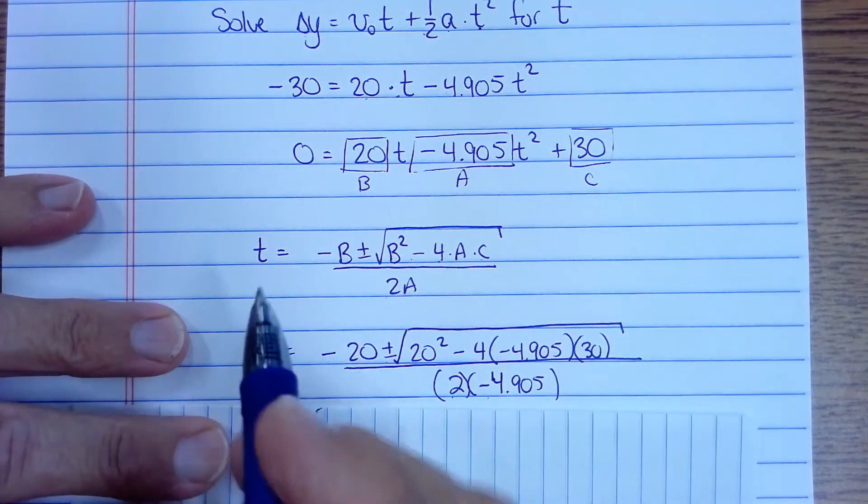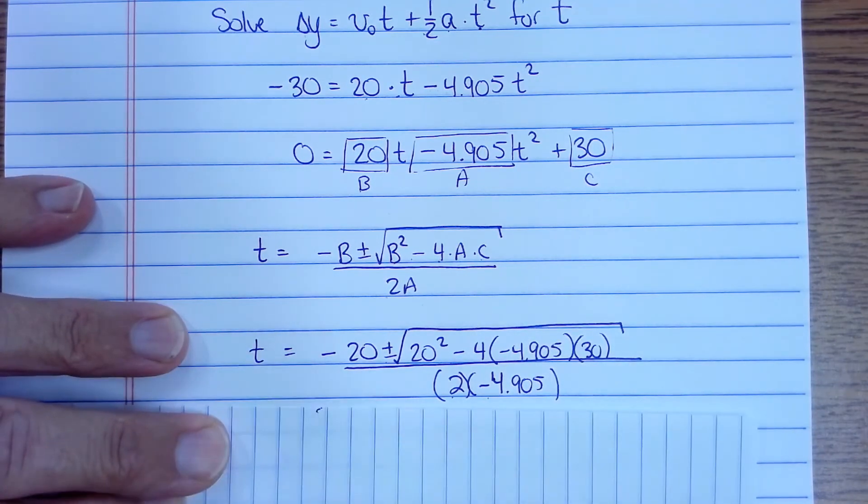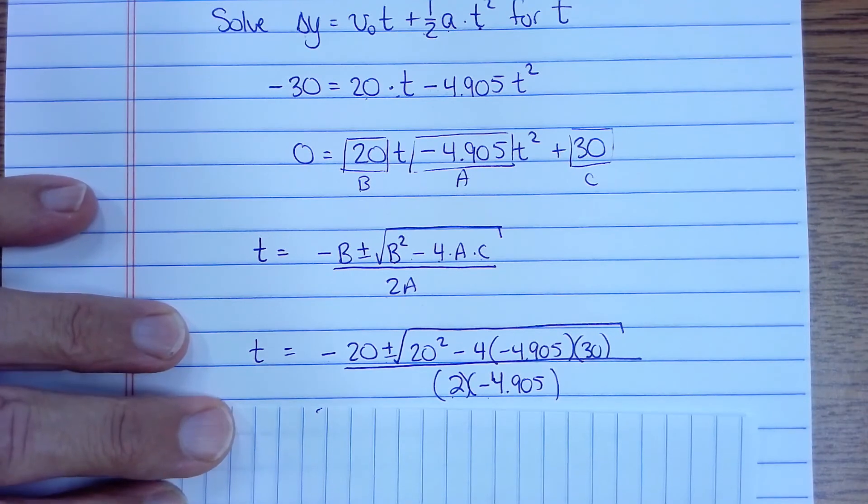So that is the expression which will tell us the time. And we're going to do it twice. Once with the plus. Once with the minus. You'll have both times. One of them will be positive. One of them will be negative.